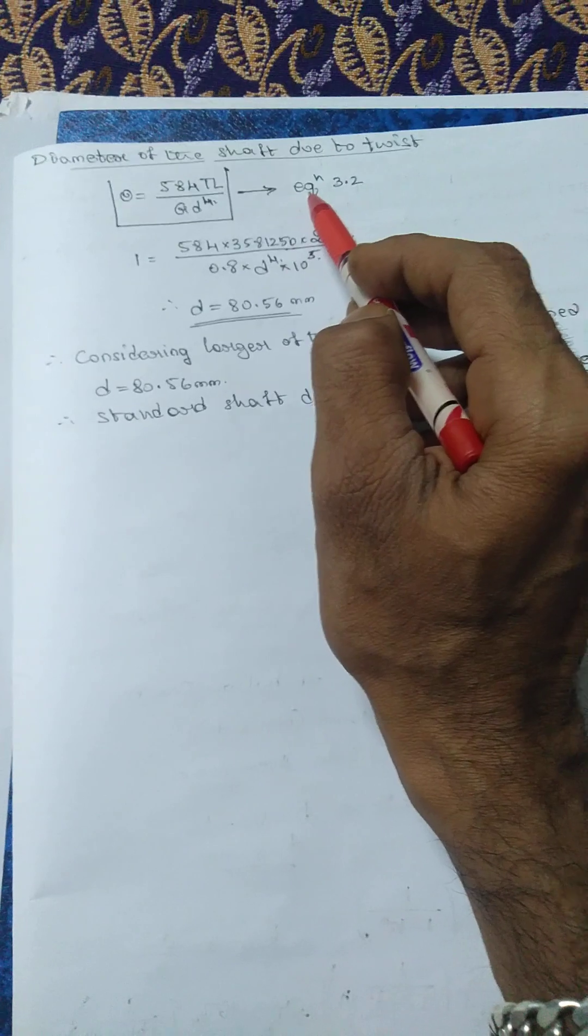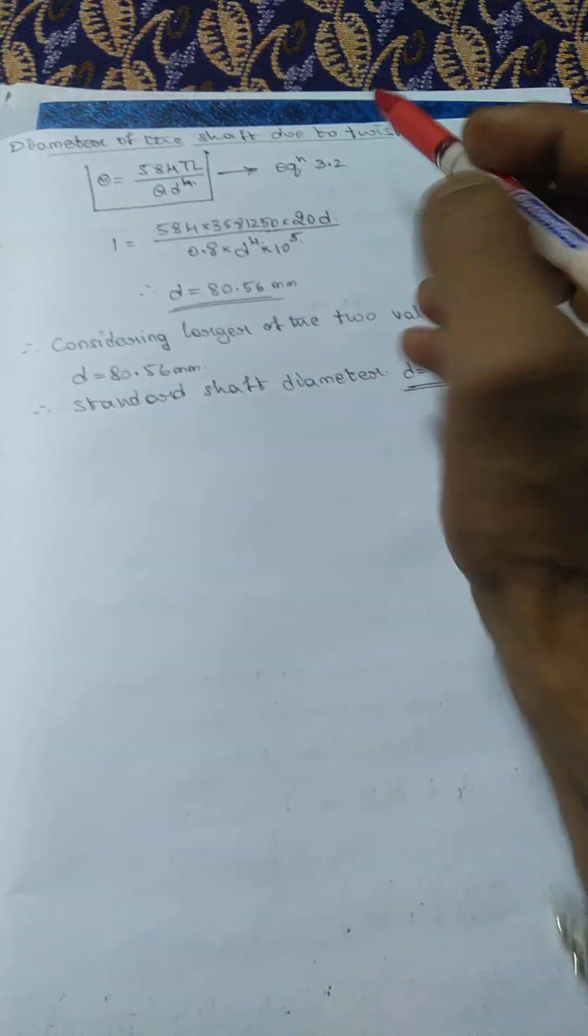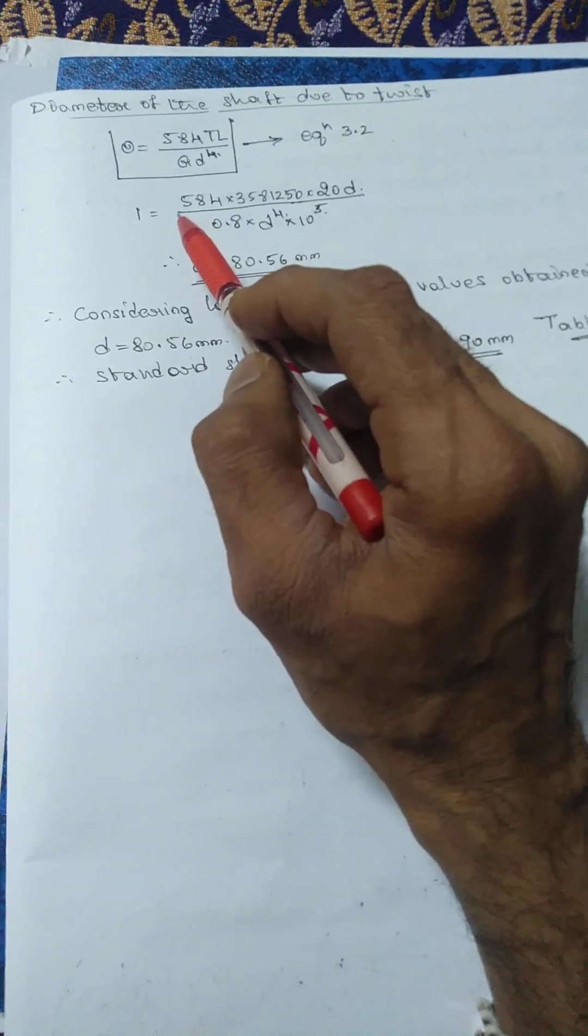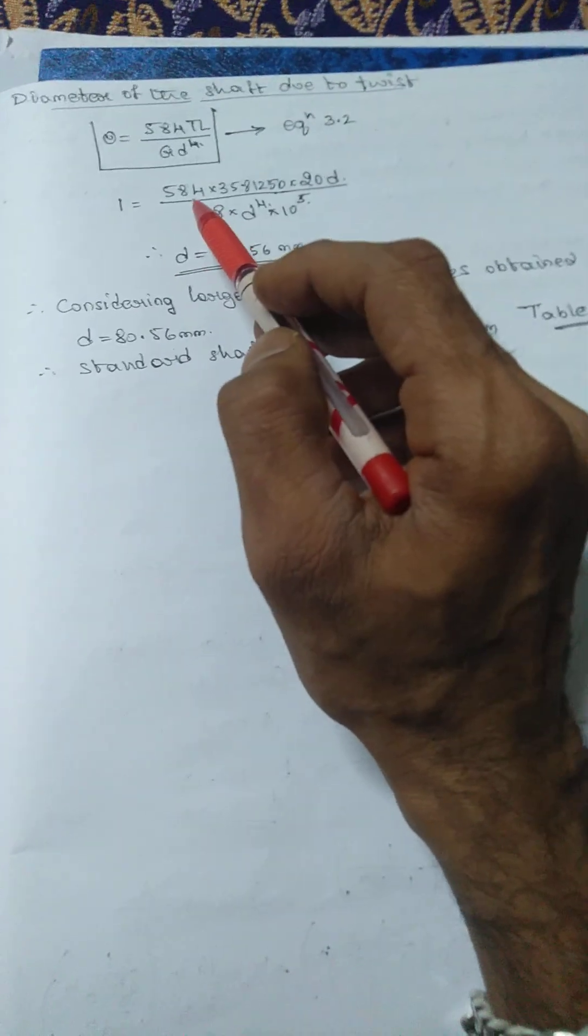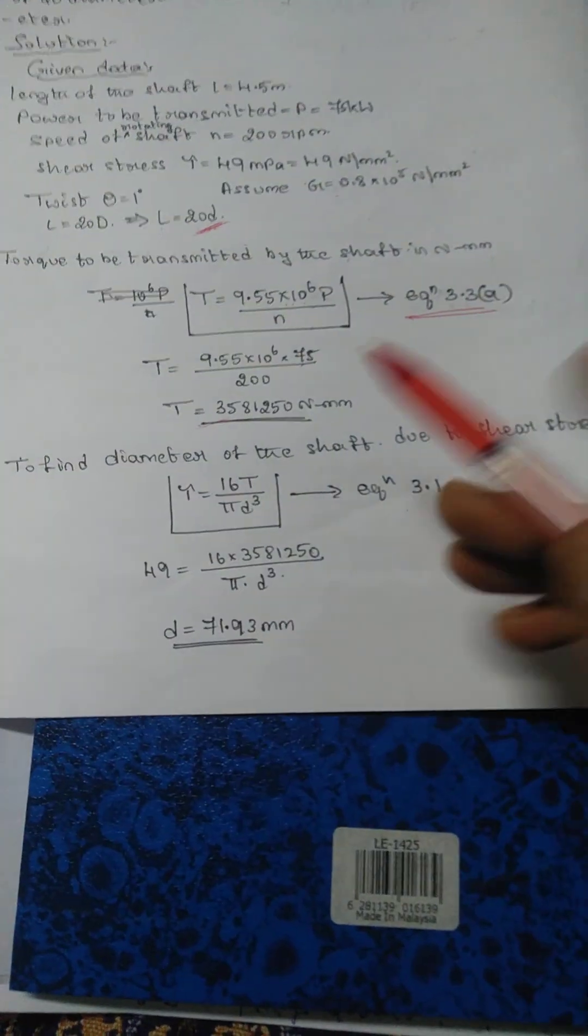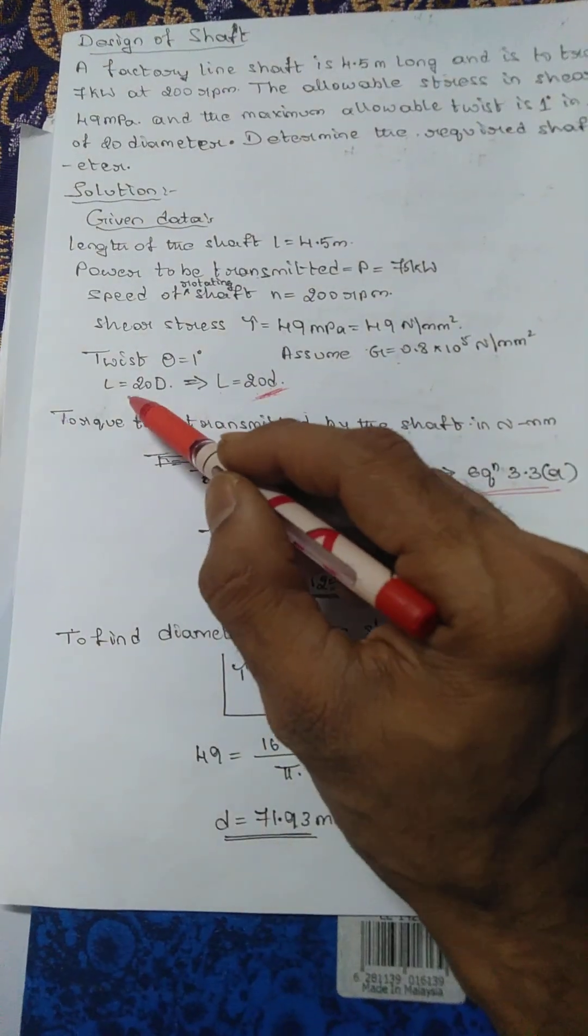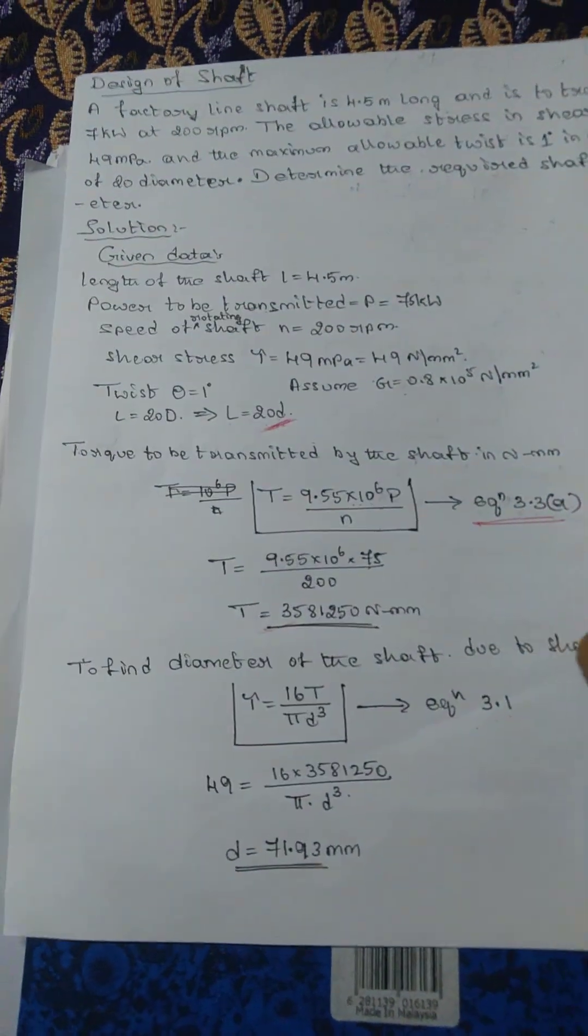Substitute theta as it is, 1, and next 584T, torque we have calculated just before, so substitute that value here times L. L is in the condition given, L equals 20D, so we will substitute the same, 20D.